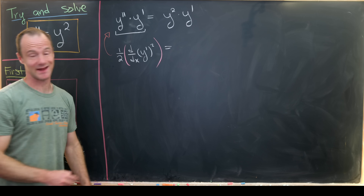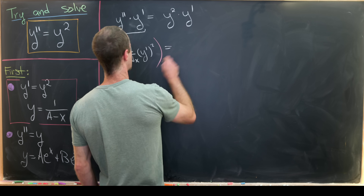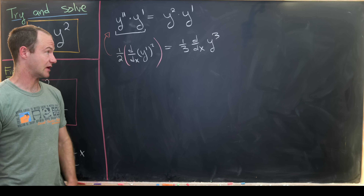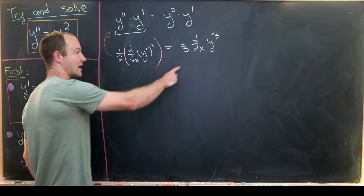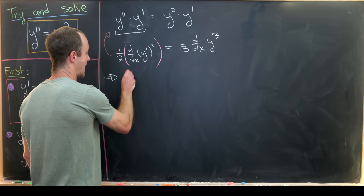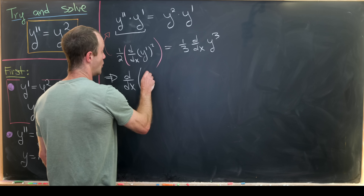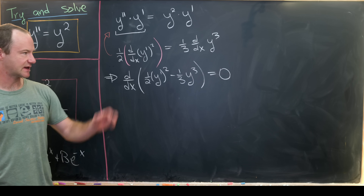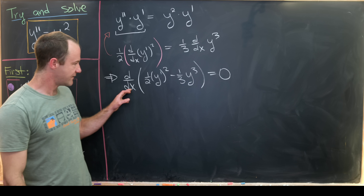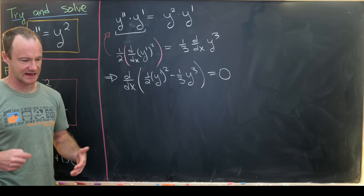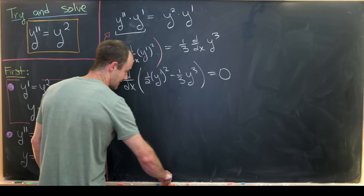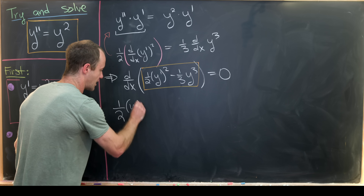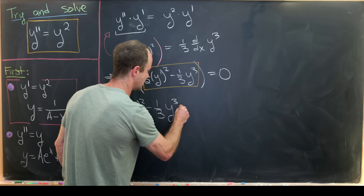On the right-hand side, something similar happens: y squared times y prime equals one third times the derivative with respect to x of y cubed, again by the chain rule. Moving things around and using the linearity of the derivative operator, we find that the derivative with respect to x of one half times y prime squared minus one third times y cubed equals zero. The only functions with a zero derivative are constants, so one half y prime squared minus one third y cubed equals a constant, which we'll call a.